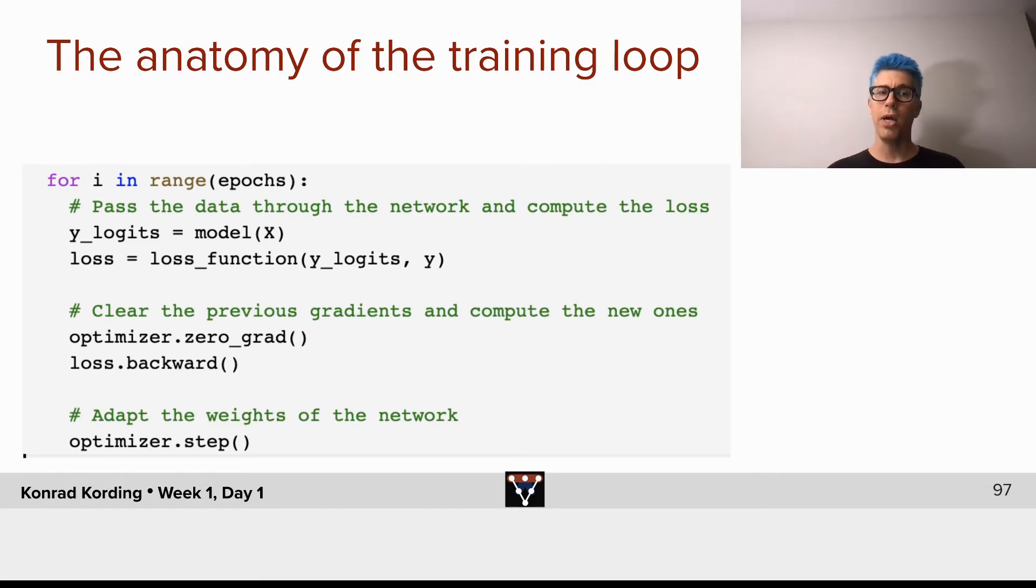We will evaluate how good our model is. Y logits is model of x. And then we will call our loss. Loss is the loss function of y logits and y. And then we will have to calculate the gradients. When we calculate the gradients, we always first need to zero them out, and then we need to calculate what the gradients are.